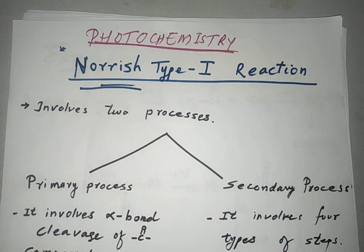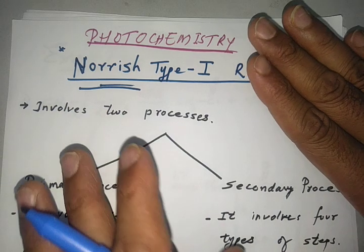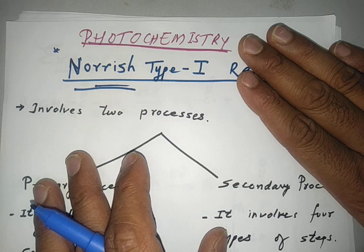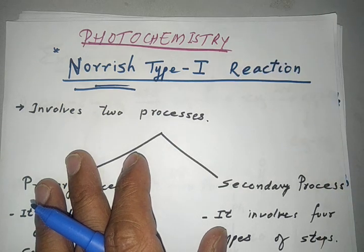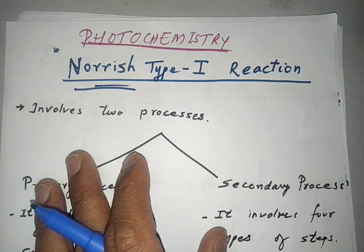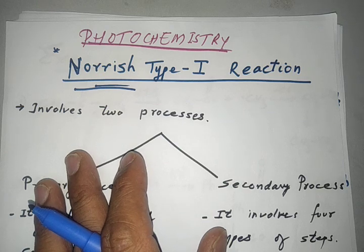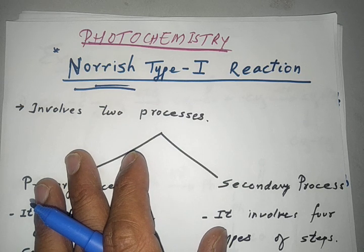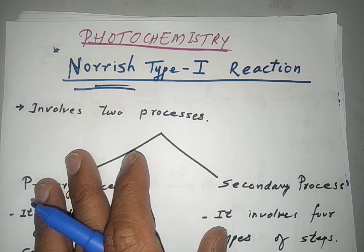The Norrish Type 1 reaction is shown by only two types of compounds as reported in the literature: ketones and aldehydes. In fact, aldehyde was the first molecule studied by Norrish in the atmosphere to check environmental conditions and its effect when it reacts with energy or radiation.